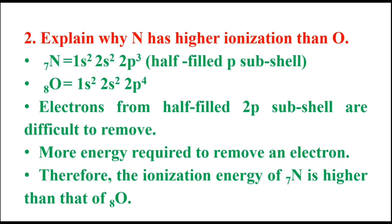Number two: explain why N has higher ionization energy than O. 7N: 1s2 2s2 2p3. Nitrogen has a half-filled 2p subshell, which is particularly stable.